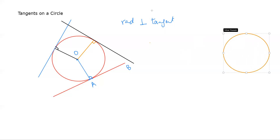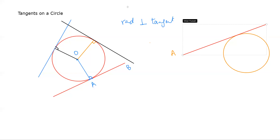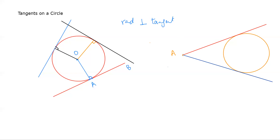Suppose we have a point A outside the circle. How many tangents can we draw from point A such that they are tangent to the circle? At most, we can draw exactly two tangents from an external point.